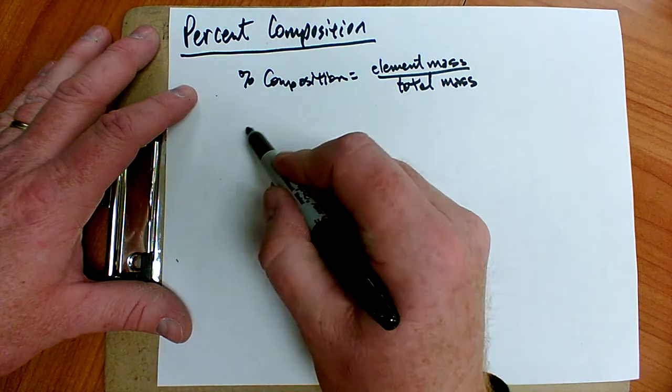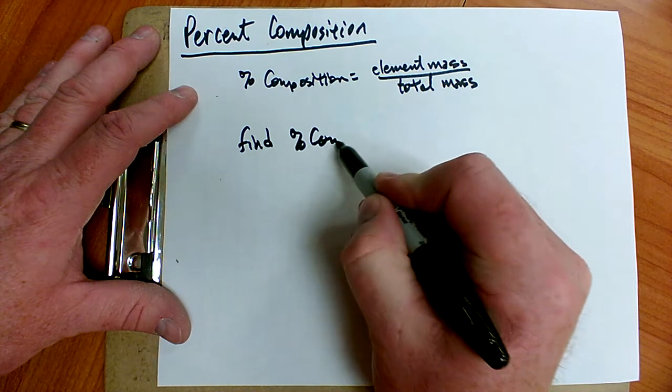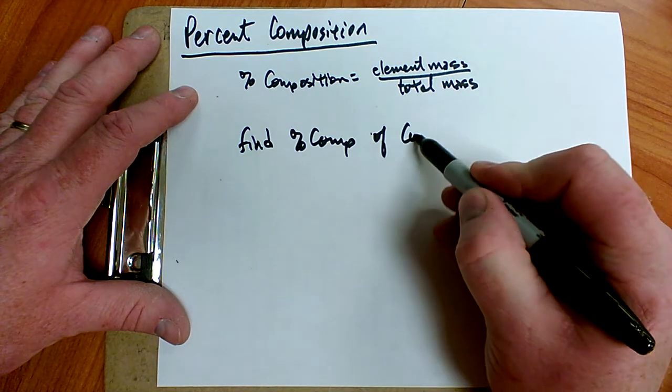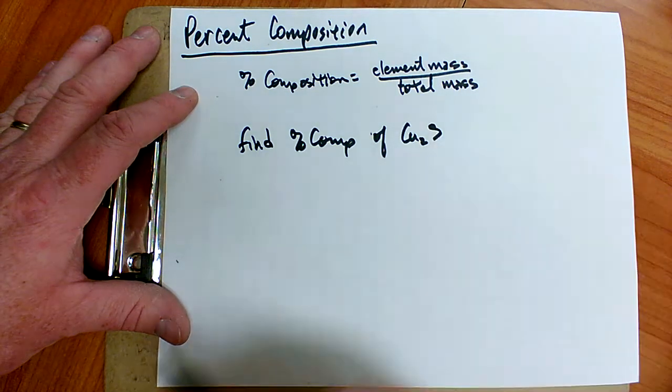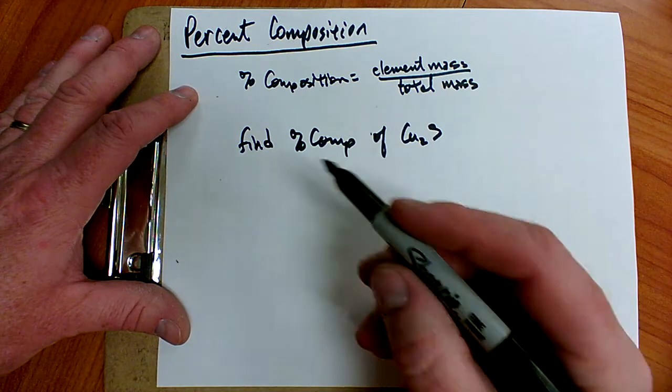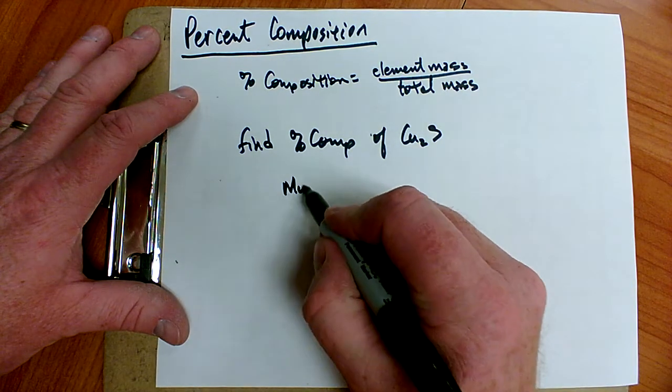So for example, if I want to find the percent composition of copper-1-sulfide, then the first thing I want to do is I'm going to find the total mass, which in this case we call that the molar mass.